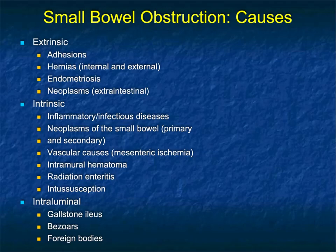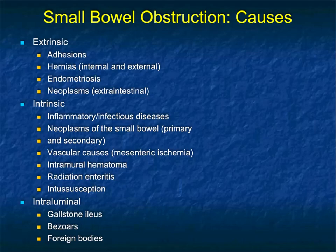If you look at bowel obstruction, there are many causes. People typically divide them into extrinsic, intrinsic, and intraluminal. Extrinsic would typically be adhesions or hernias, endometriosis, or tumors — the first two being most common. Intrinsic causes include inflammatory disease, neoplasms, vascular causes, hematoma, radiation, intussusception. Intraluminal causes are unusual, ranging from gallstone ileus to foreign bodies.